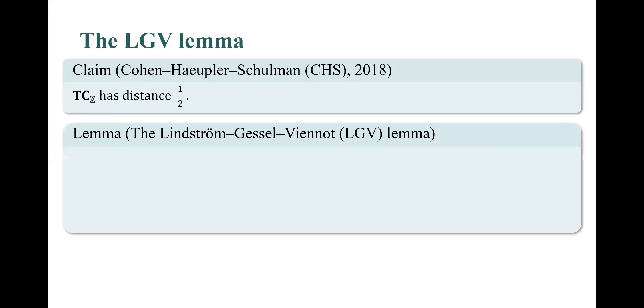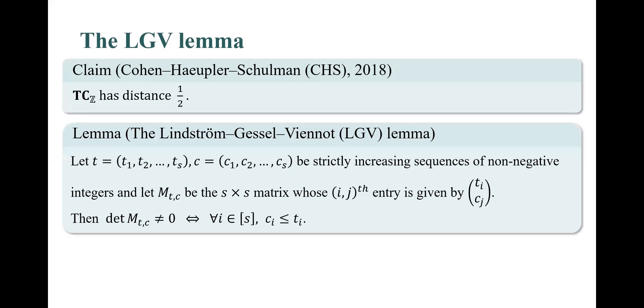CHS proved the tree code T_C_Z has distance of one half. This was proved using the LGB lemma, which says the following. Let t and c be strictly increasing sequences of non-negative integers, and let M_t_c be the s by s matrix whose i,j entry is given by t_i choose c_j. Then the determinant of M_t_c is non-zero if and only if for every index i, c_i is smaller or equal to t_i. We will refer to sequences t,c that satisfy the above properties as legal sequences. In addition, to indicate that for every index i, c_i is smaller or equal to t_i, we will simply say that c is smaller or equal to t.